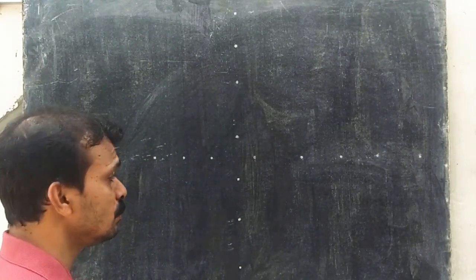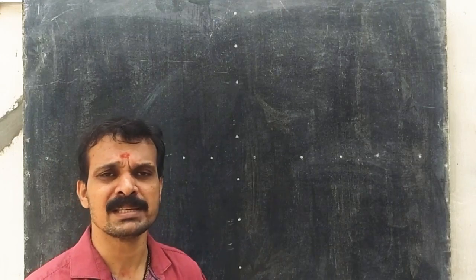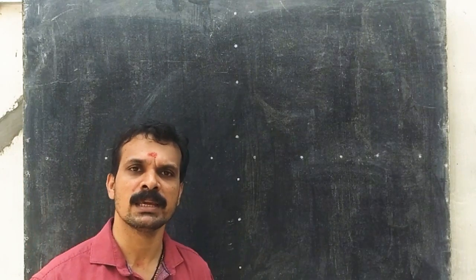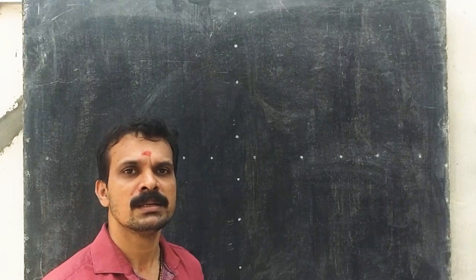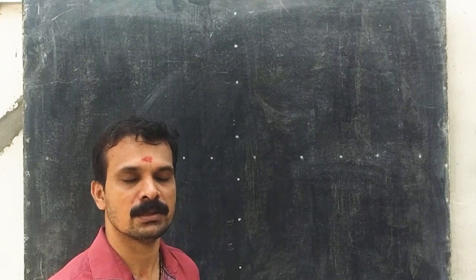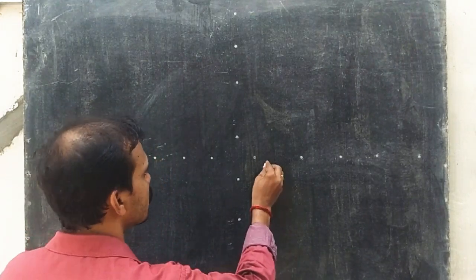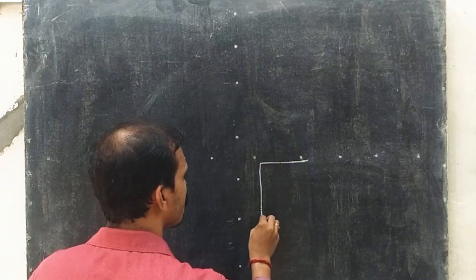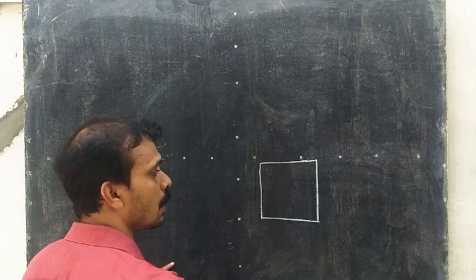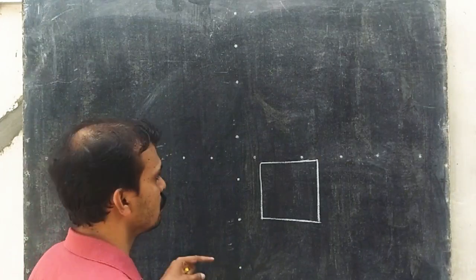Consider a square pyramid of some base and some height, cut by an auxiliary inclined plane. If this is the square pyramid placed on the ground, this will be the top view of the square pyramid.